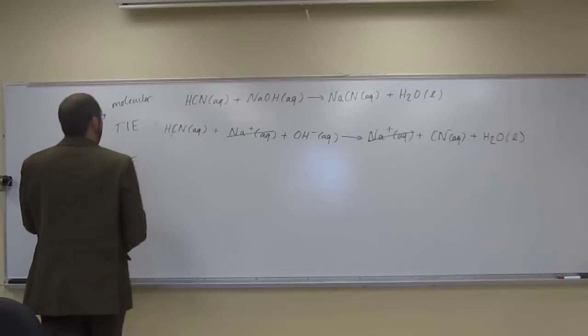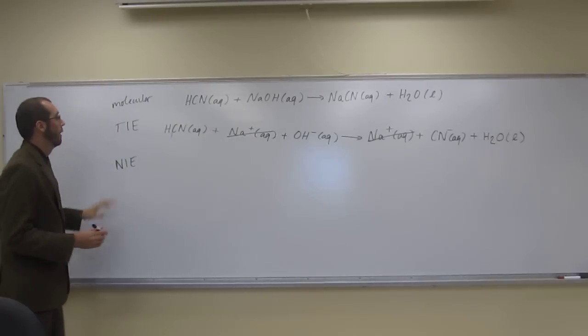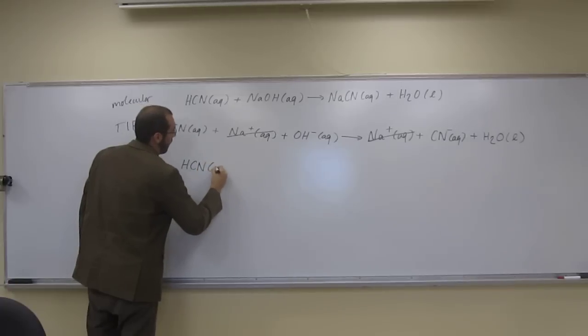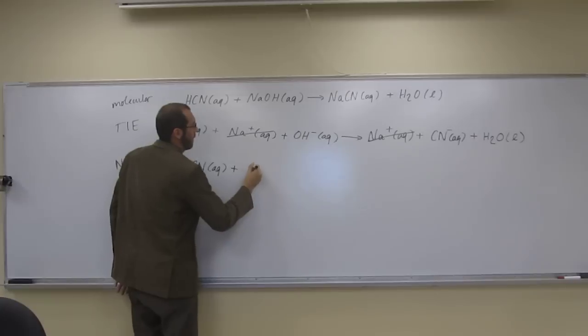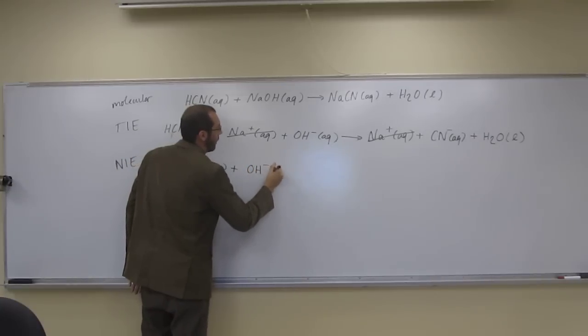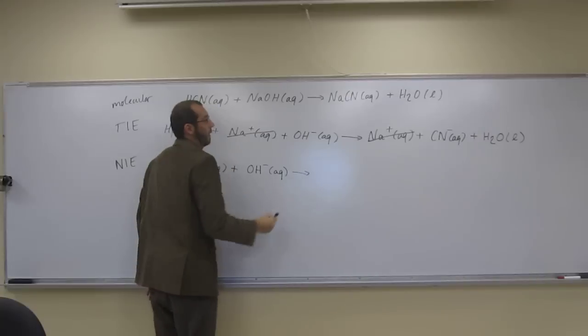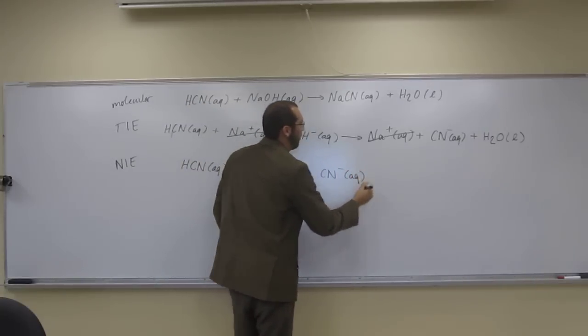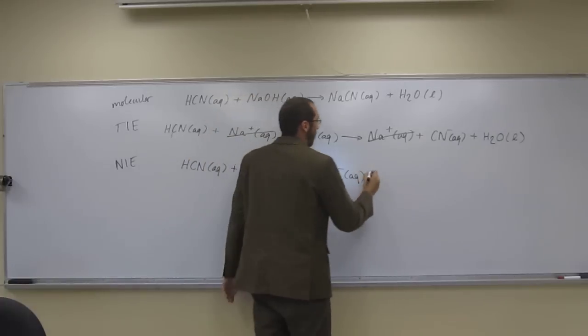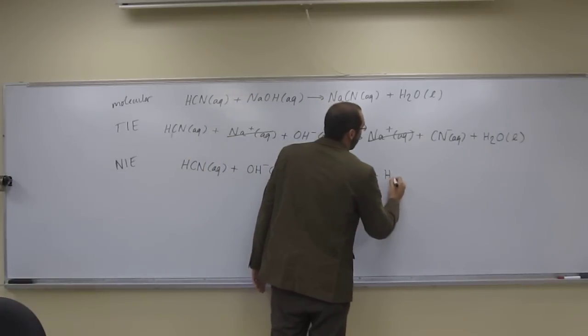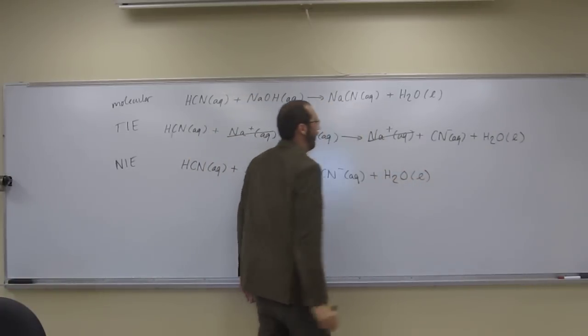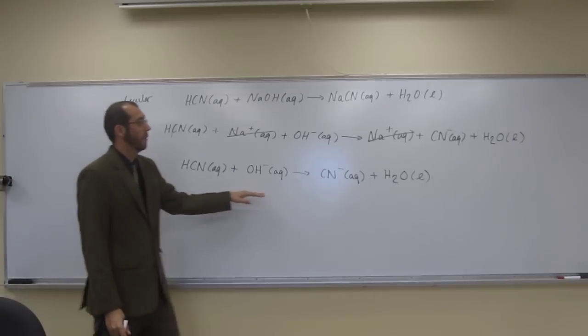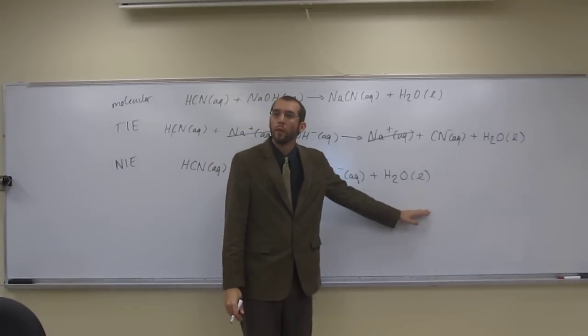So that's it. The net ionic equation is the weak acid itself plus the hydroxide ion goes to the conjugate base of the weak acid. Remember, that's the conjugate base, plus all the things that they formed. So whenever you have an acid base reaction, you're going to form water.